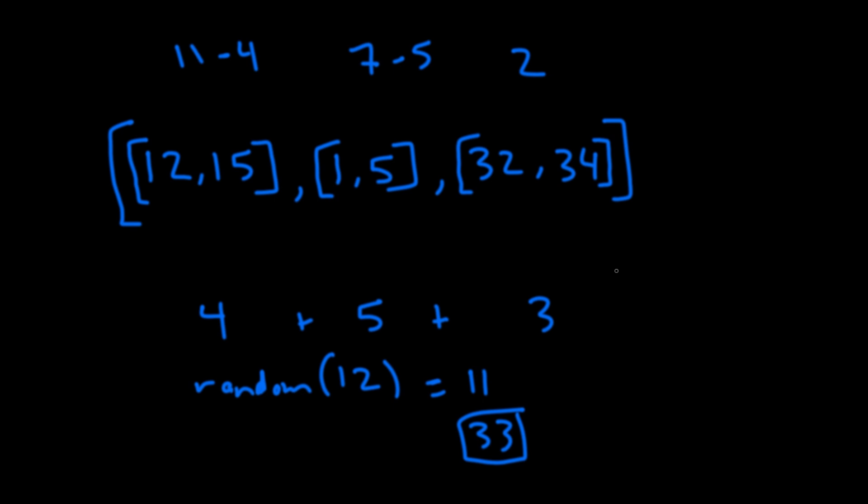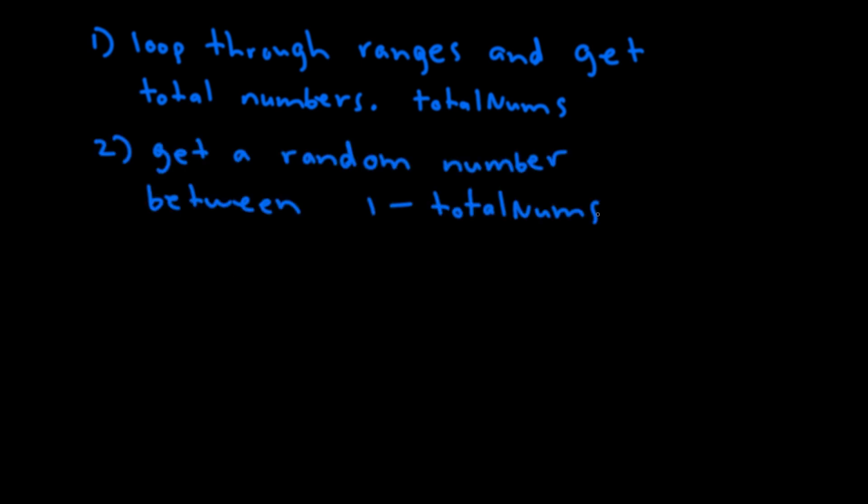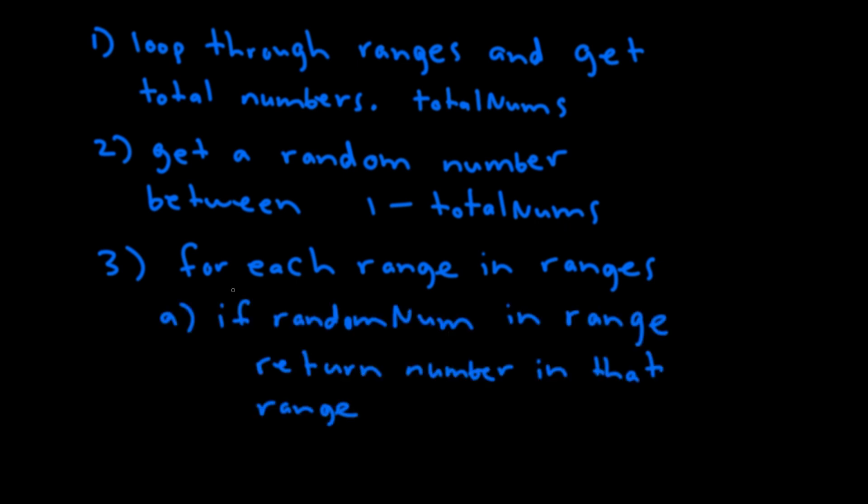Now that we have an idea of what we're doing, let's write some pseudocode first. We're going to loop through all the ranges and get the total numbers, we'll call this total_nums. Then we're going to get a random number between 1 and total_nums. Then we'll loop through our ranges - for each range, if our random number is within that current range, we return the appropriate number. Otherwise, we subtract the amount of numbers in that range from our random number.